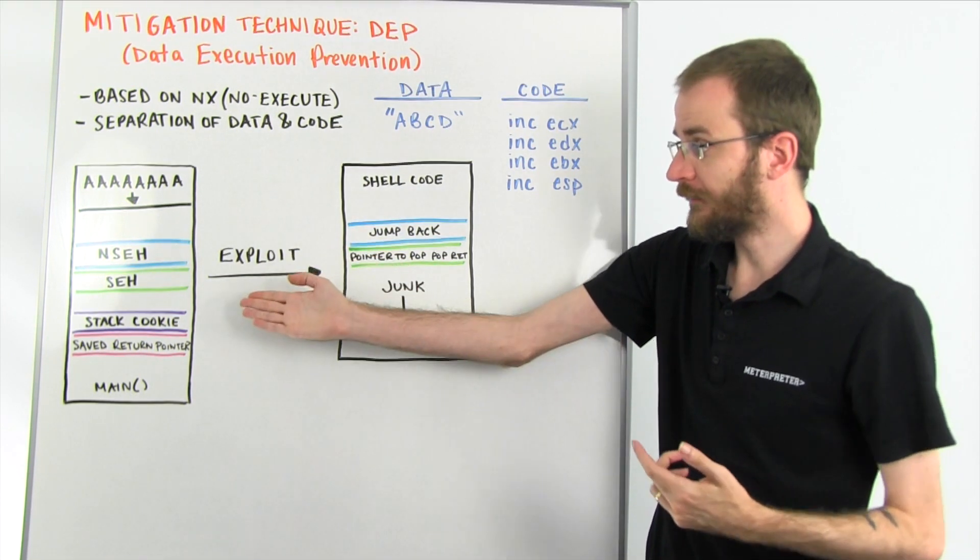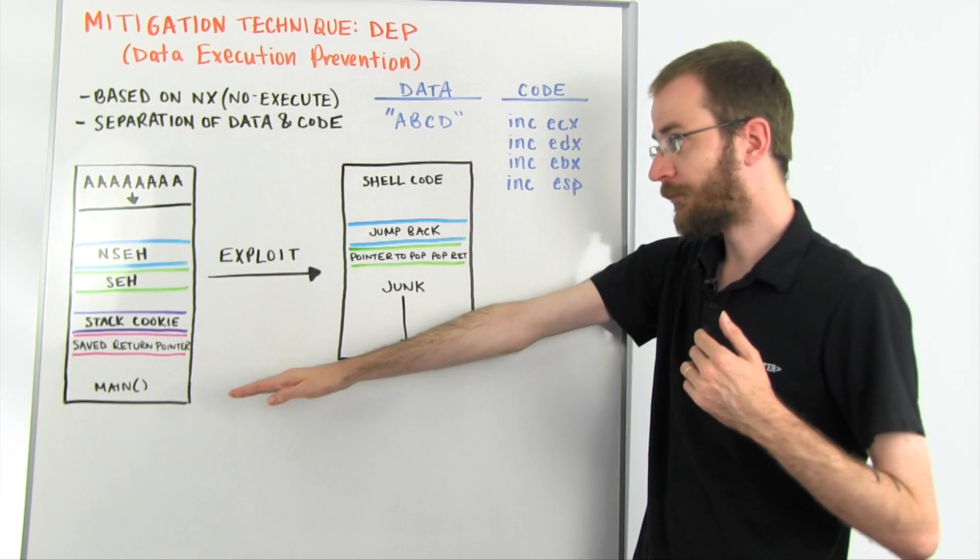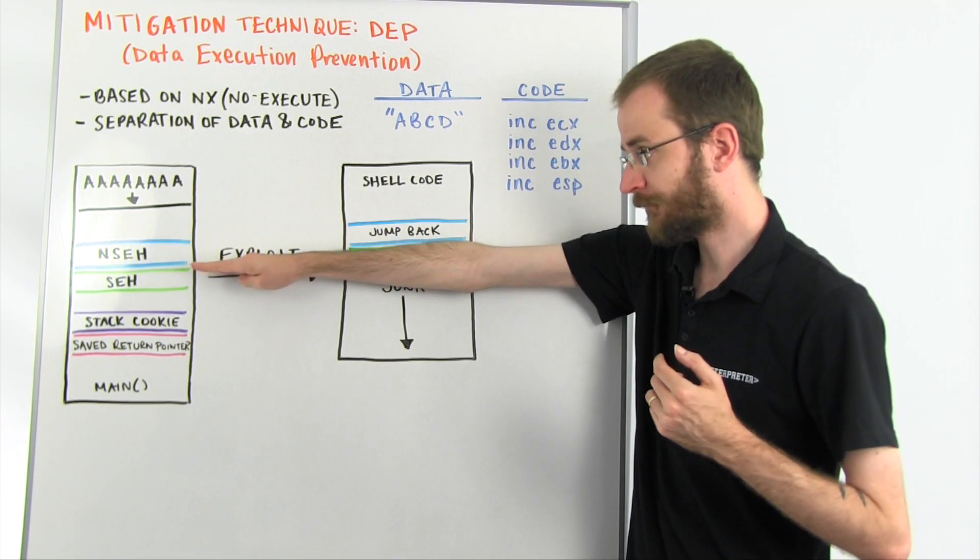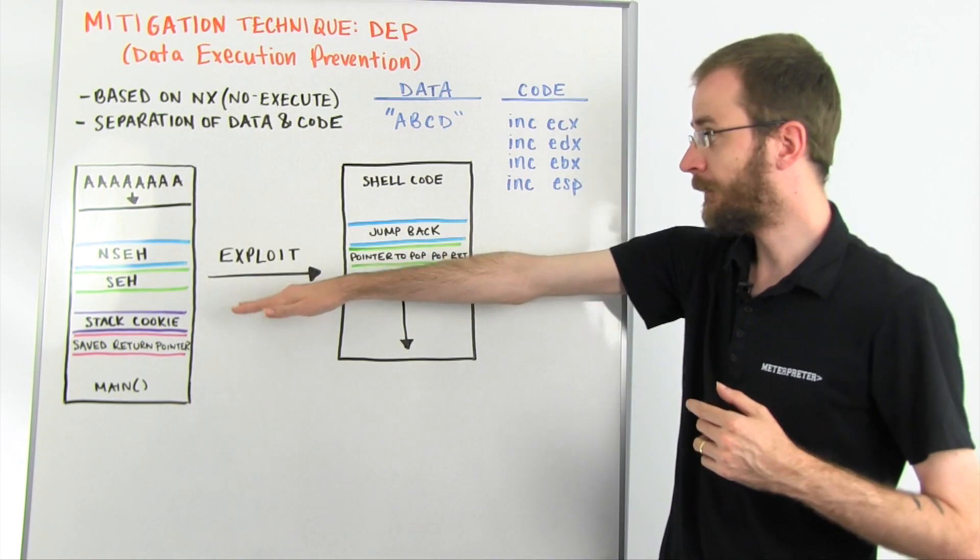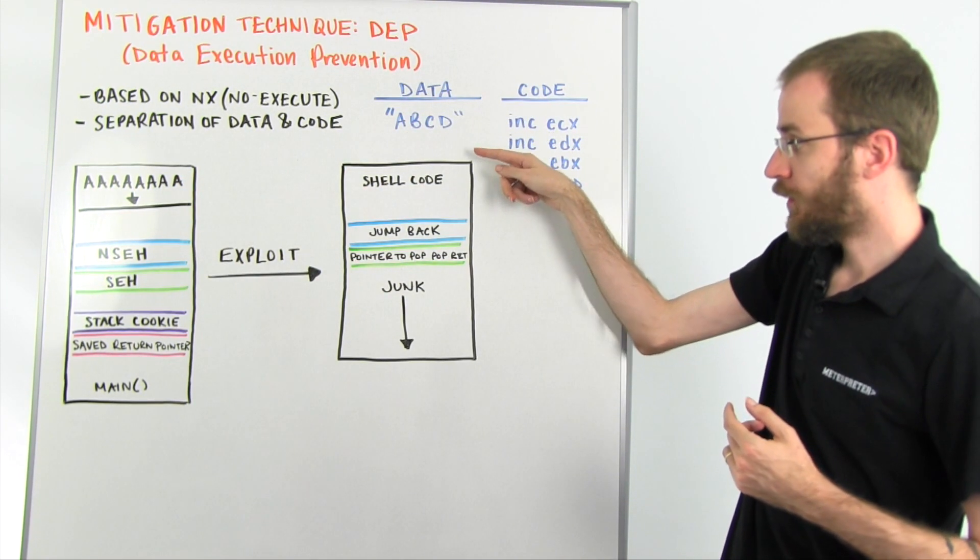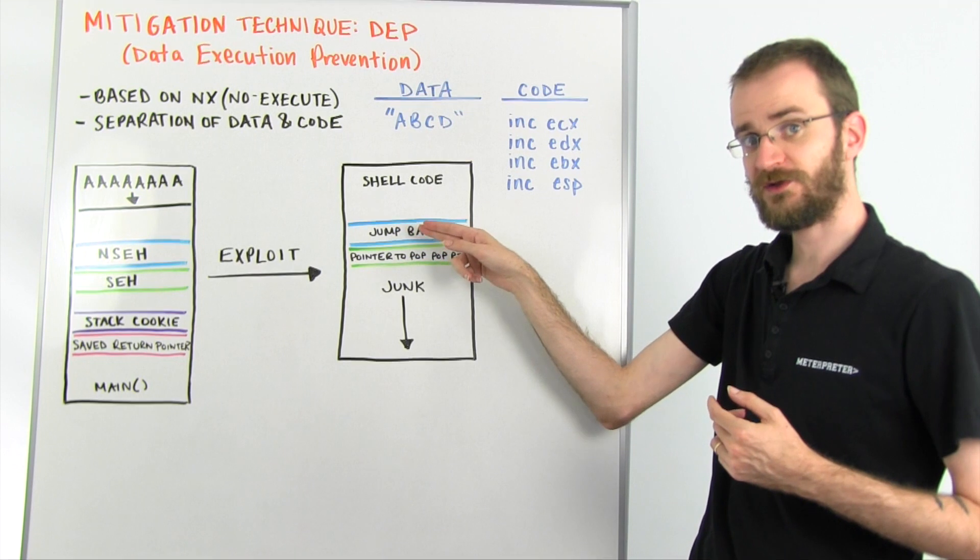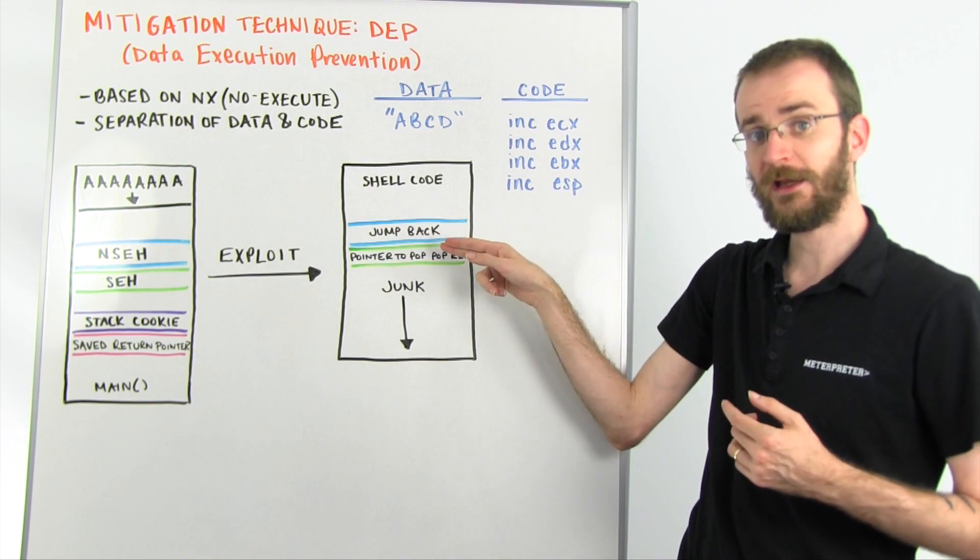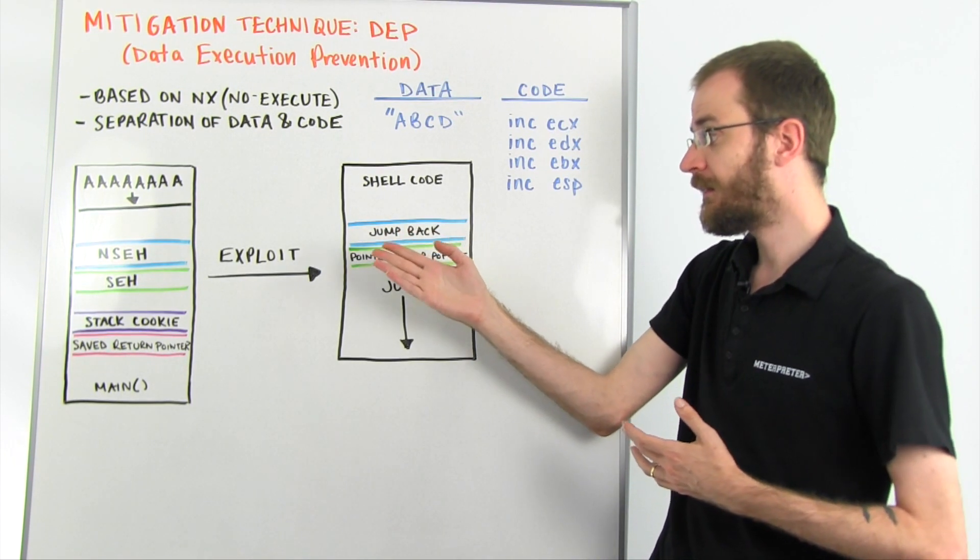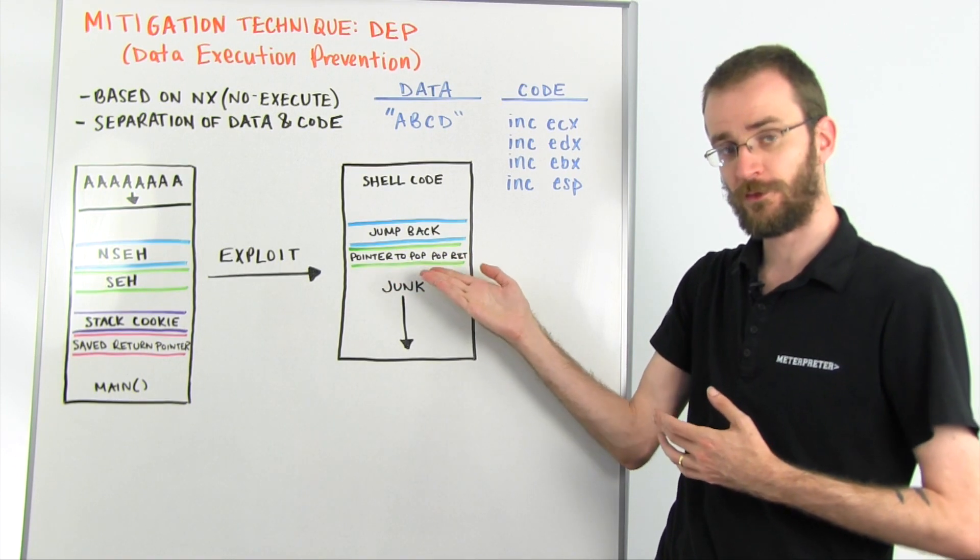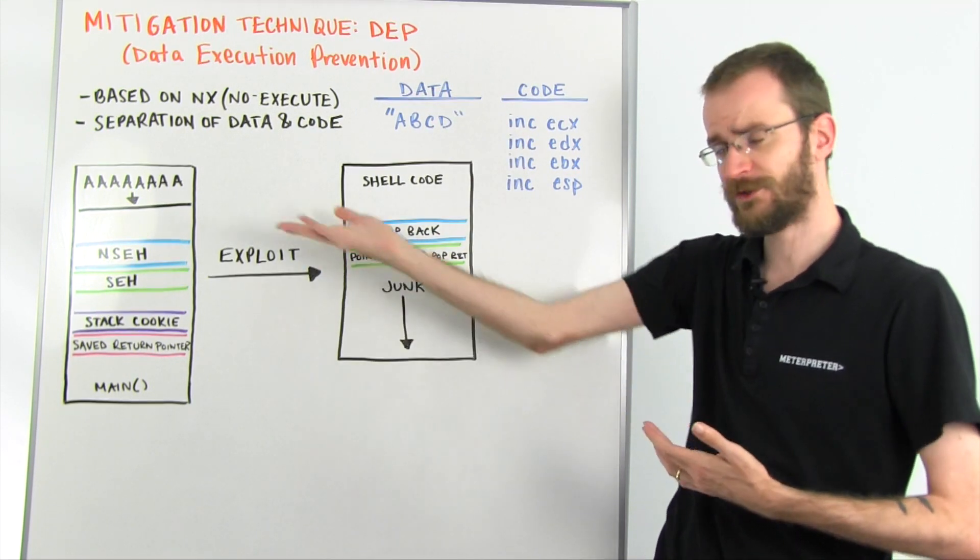If you look at it in the case of our structured exception handler overwrite here again, this is what our stack looks like before we run our exploit. With our structured exception handler record here, our stack cookie, our saved return pointer, and we overflow this buffer by sending a bunch of data, and the stack ends up looking something like this, where we have our shellcode, the NSEH record is a series of instructions that are going to be interpreted as jump back, but at the time that we're feeding it, it's just a set of regular data, probably various characters, and the same thing with the pointer to our pop pop return instruction, and then just a bunch of junk to create the exception that will trigger our exploit.